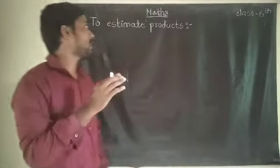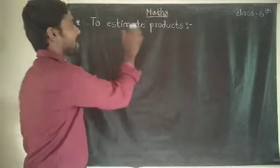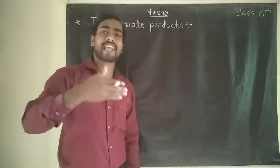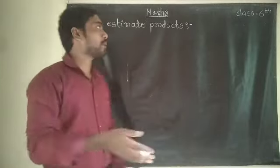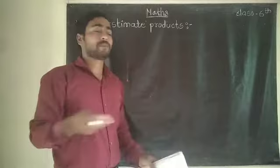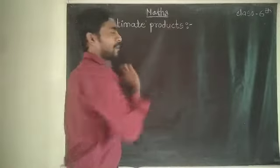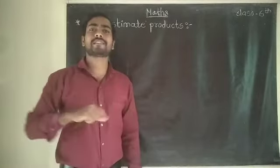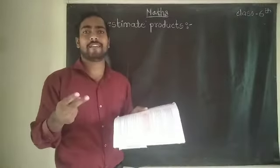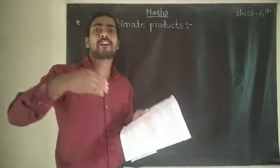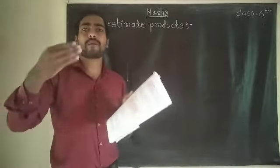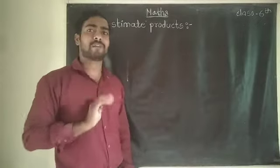Today our topic is to estimate the product. In the previous video we saw sum and difference — addition and subtraction. Now today we are estimating the product. Product means multiplication. We are going to take two numbers, multiply them, and also find the rounding of those numbers to the nearest 10, nearest 100, and nearest 1000.